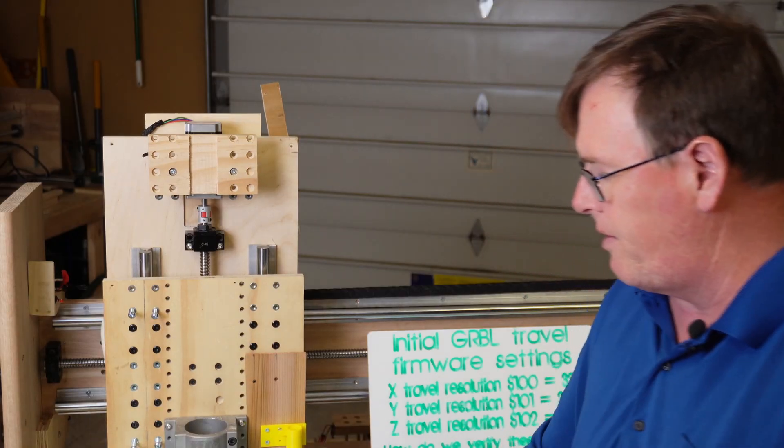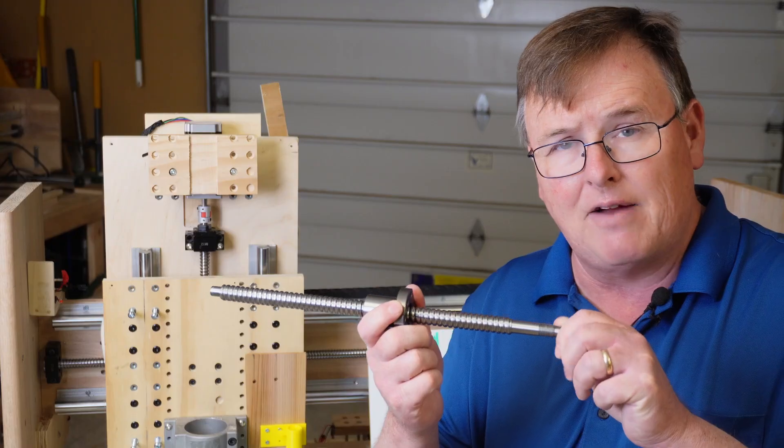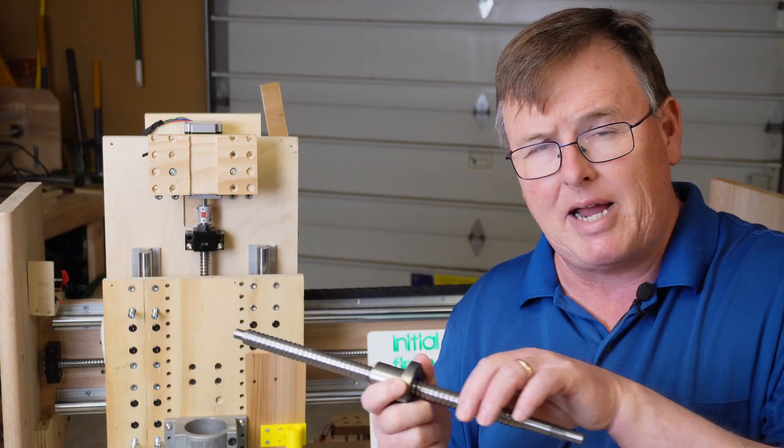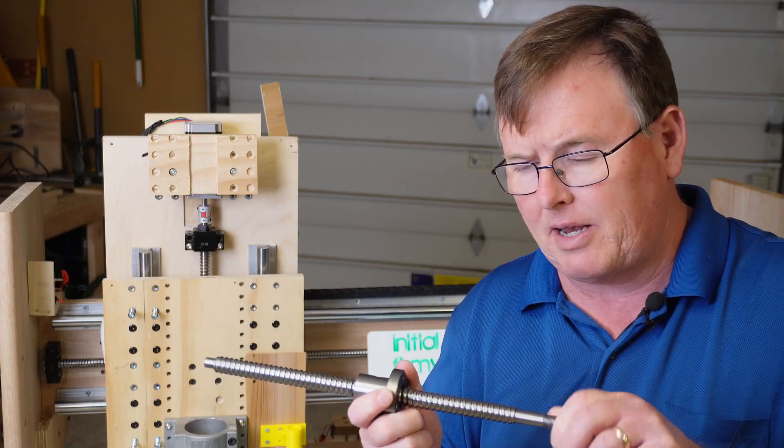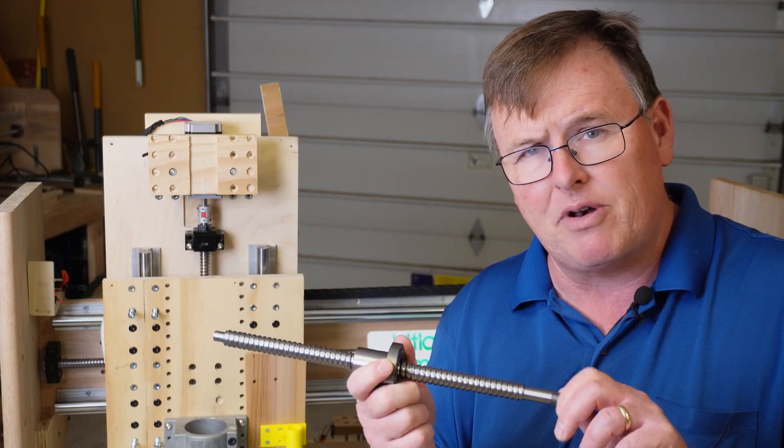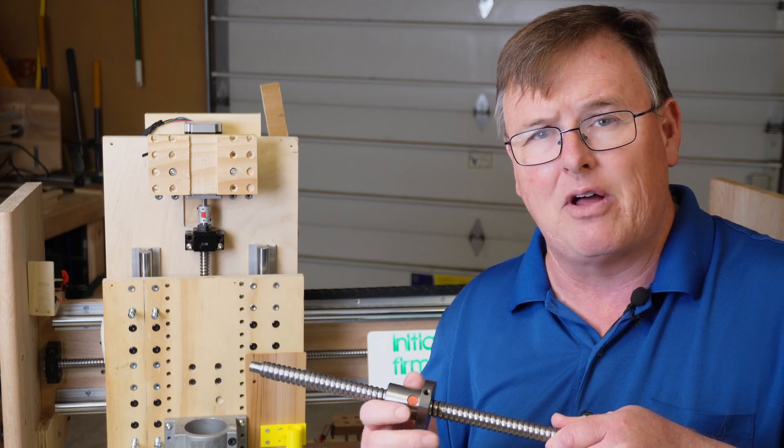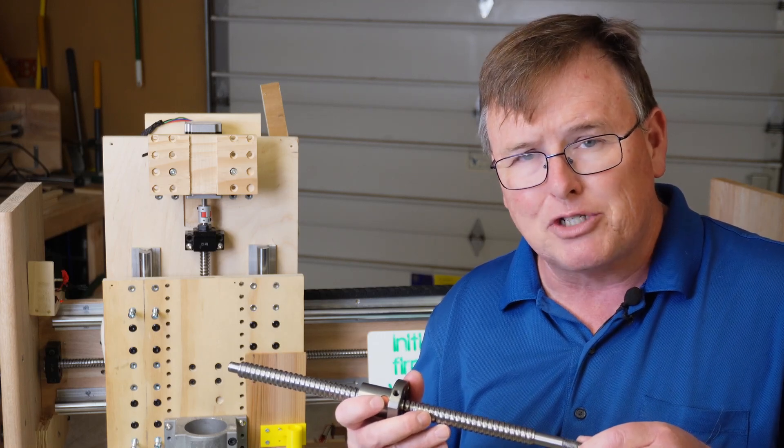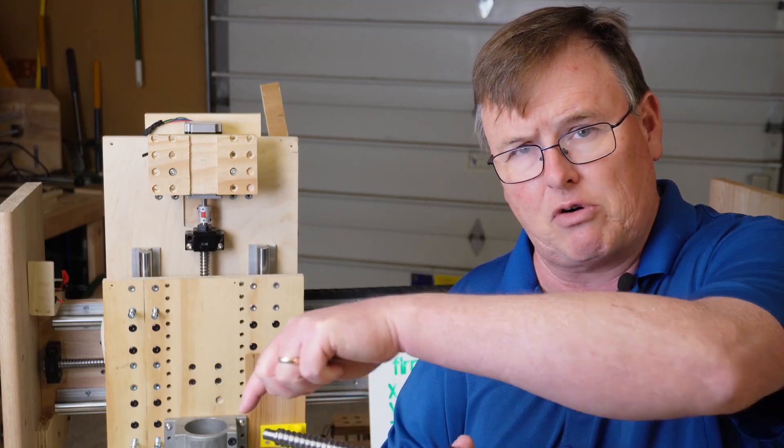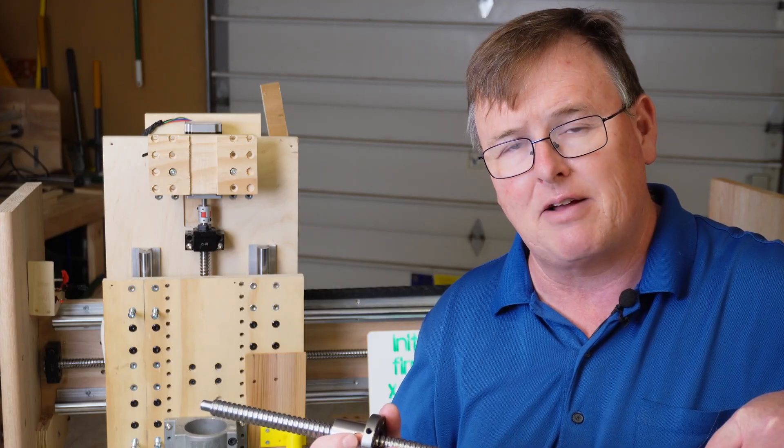But here's what a lot of people don't really think about. Now, that lead of five, even though the manufacturer says it's five, there's always, this is physically made, so there's always a little bit of tolerance issues, and that may not be perfectly ground on your particular ball screw. It doesn't sound like much to have it say the lead is 5.00002, but if you start doing hundreds and hundreds of revolutions across a long distance of a ball screw, by the time you get to the end, it's fairly significant.